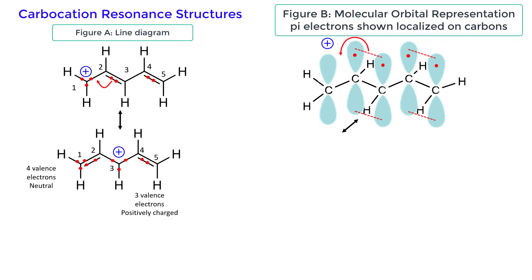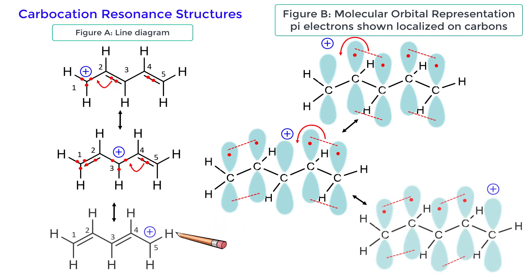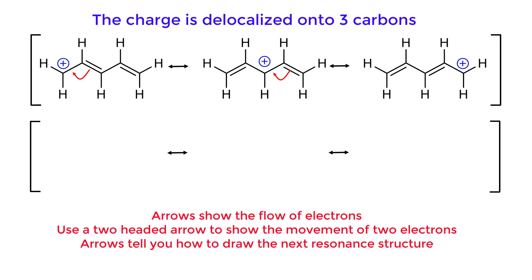The positive charge can also be delocalized with the pi bond between carbons 4 and 5. Use a two-headed arrow to show the movement of the pi bond between carbons 4 and 5 to between carbons 3 and 4. The positive charge is now on carbon 5. Thus the charge for this compound is delocalized onto three carbons.